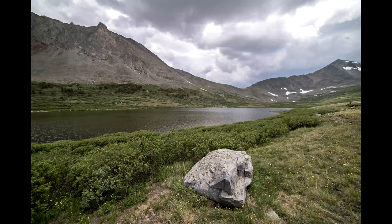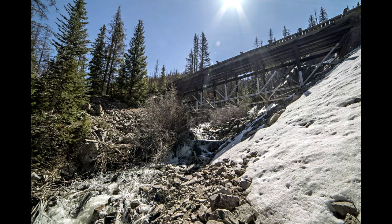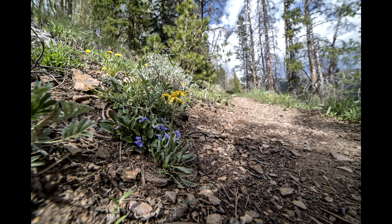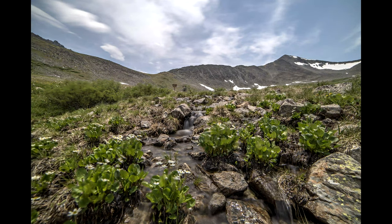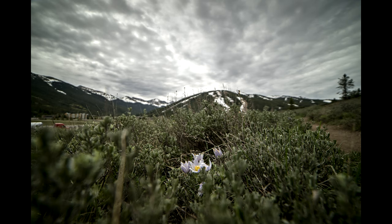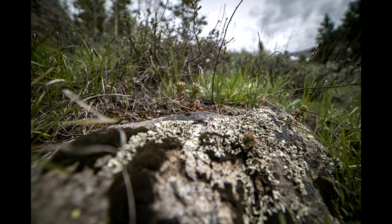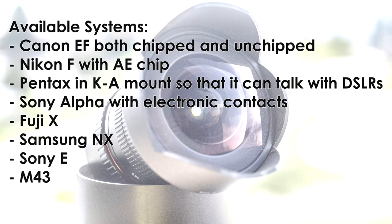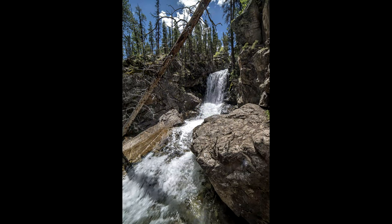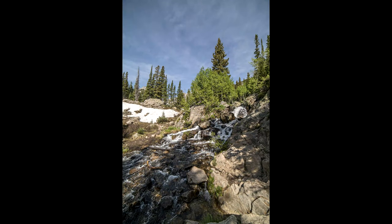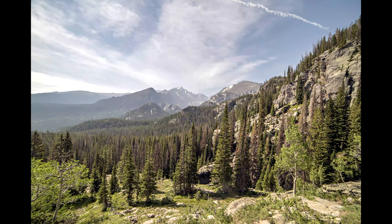For filters, not applicable — there is no way to mount a filter on this lens. The closest focus is 0.28 meters, or 11 inches, which is incredibly close for a wide-angle lens and allows for close-up subject isolation with the surroundings also in frame. It is manual focus only, regardless of which mount you get. Systems available include Canon EF chipped and unchipped, Nikon F with AE chip and AI aperture ring, Pentax KA mount, Sony Alpha with electronic contacts, Fuji X, Samsung NX, Sony E without a chip, and Micro Four Thirds.